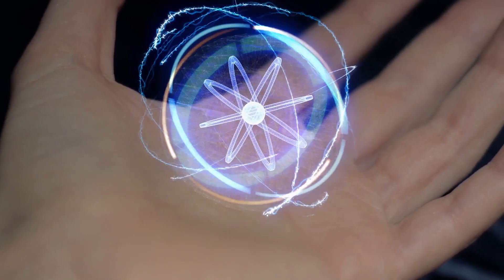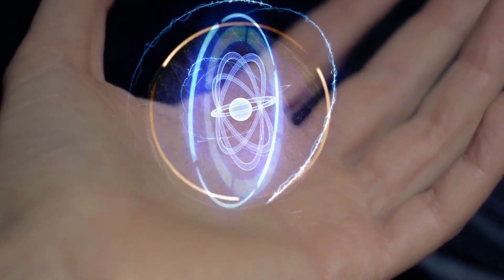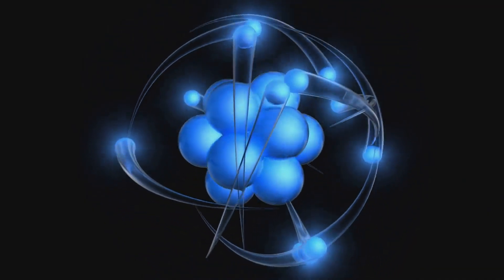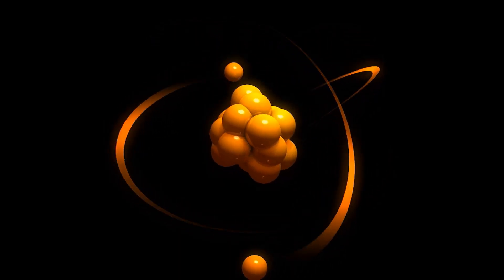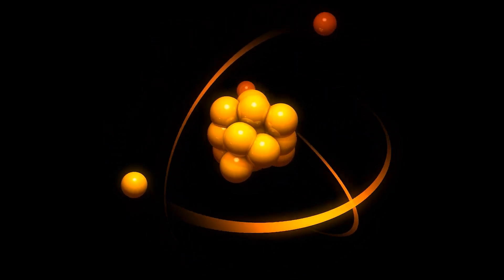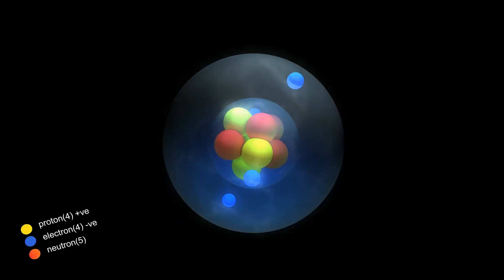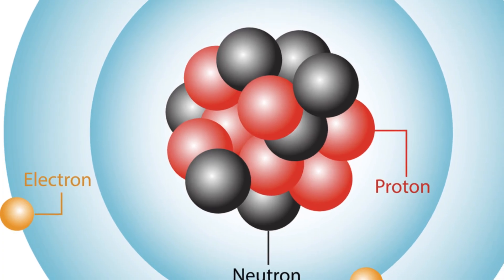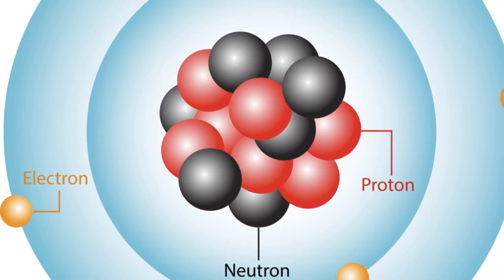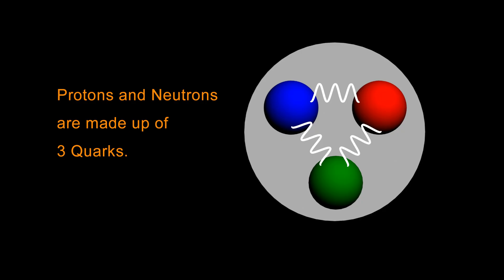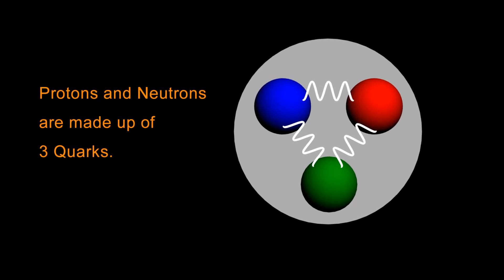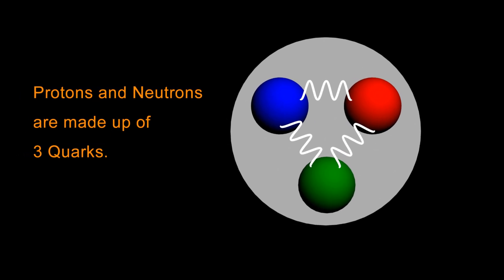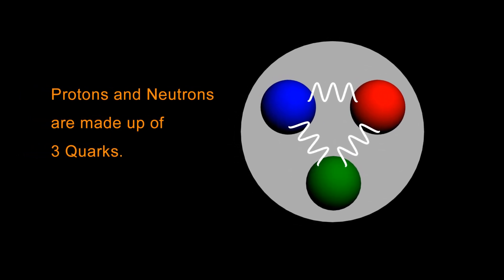To better understand this, we first have to look at what scientists call the building blocks of the physical universe. According to mainstream science, the universe is made up of atoms. But atoms are not the most fundamental units of creation. Atoms themselves consist of protons, neutrons and electrons. Electrons are negatively charged point particles and cannot be divided into smaller parts. Protons and neutrons, however, are made up of even smaller entities called quarks, which appear to be fundamental and are not made up of even smaller parts.